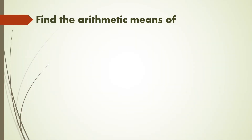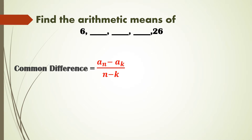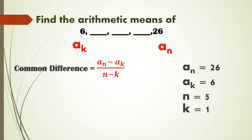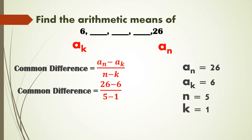Let's try another one: find the arithmetic means of 6, _, _, _, 26. We use the same formula: d = (aₙ − aₖ) / (n − k). Assigning aₙ = 26 (the fifth term, n = 5) and aₖ = 6 (the first term, k = 1): (26 − 6) / (5 − 1) = 20 / 4 = 5. The common difference is 5.